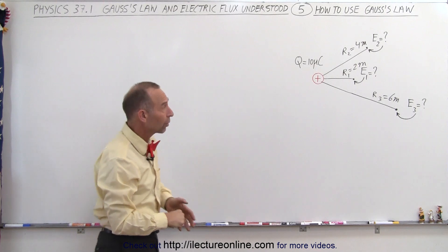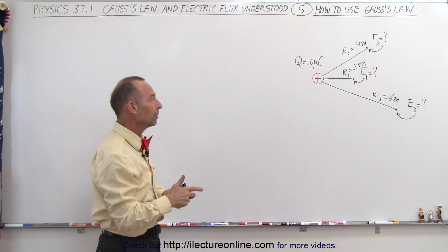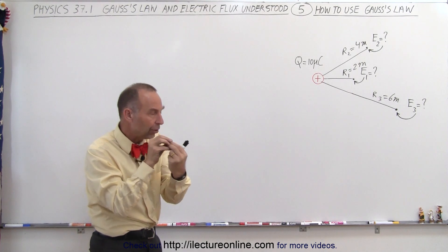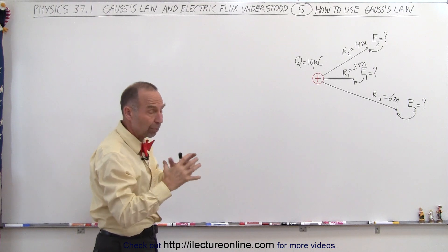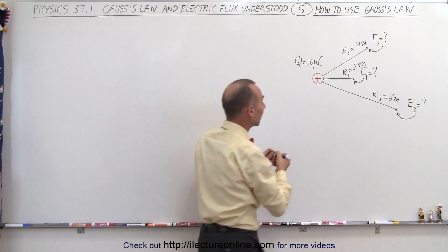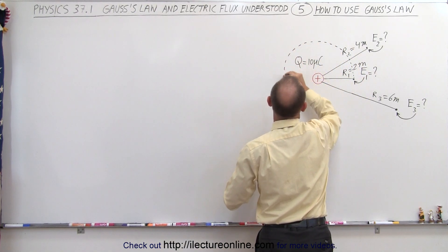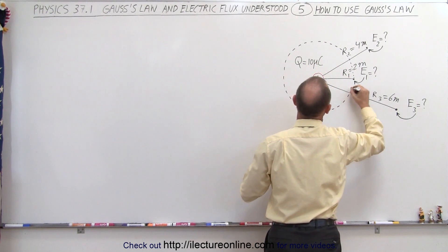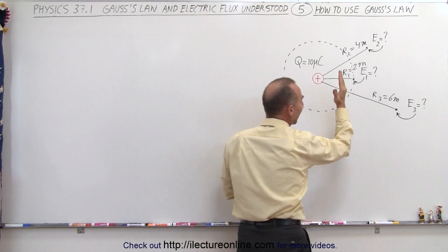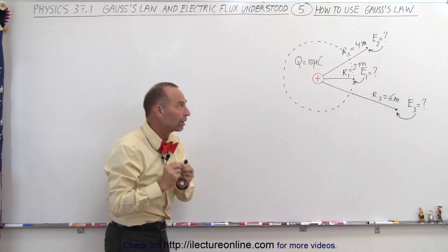What is the strength of the electric field at each of those three locations? The way we do that is by drawing a Gaussian surface around it. We need to make sure that the charge remains at the center of the sphere, because a Gaussian surface in this case will be the shape of a sphere. We draw it so the charge is right at the center of that imaginary sphere, and the edge of the surface goes right to the point where we want to know the strength of the electric field.